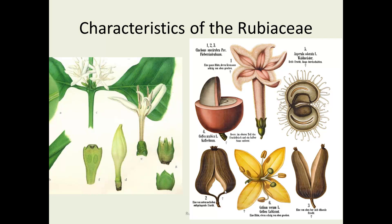Looking at characteristics, you can see on the right a pinkish flower, very typical of this family — the fused corolla with a flare at the end. On the left, image four labeled, is a coffee bean, which is not actually a bean. The outer fleshy part is removed before the inner seed is roasted. Similar diagrams of the same plants are shown on the left as well.